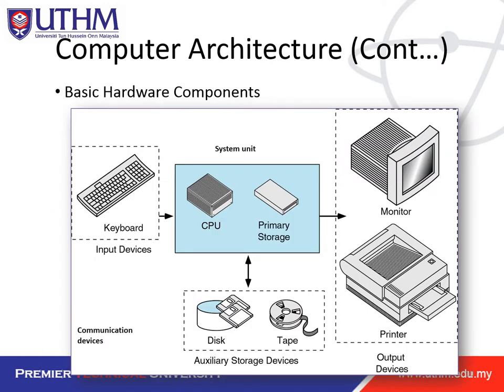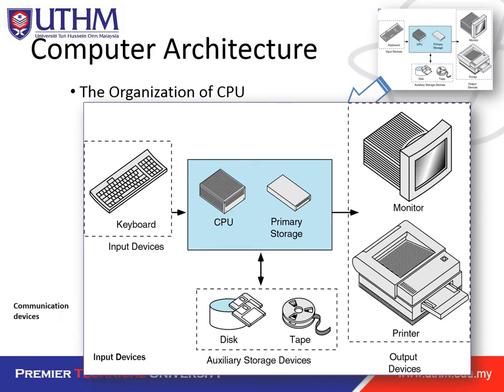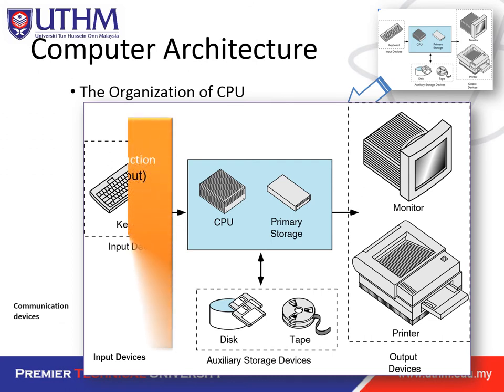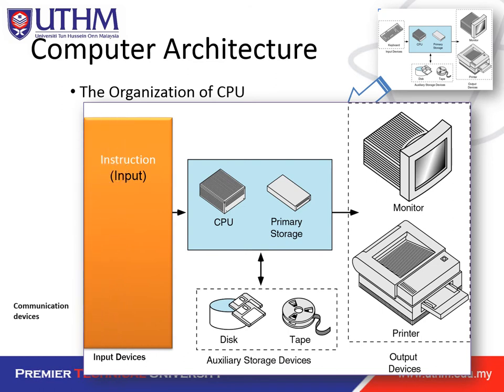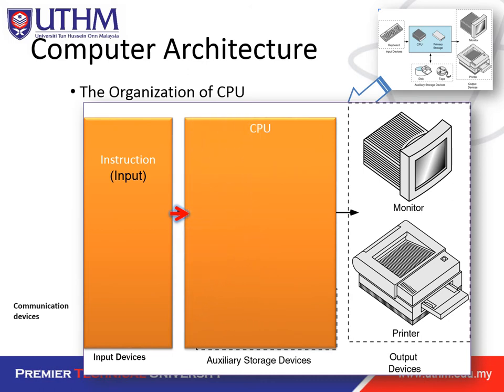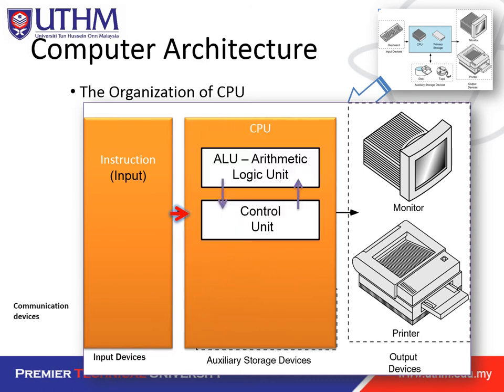This is the computer architecture — the basic hardware components. You can see the keyboard as the input device, and then you have the CPU, the secondary storage device, and the output device. The organization of the CPU shows the input device providing instruction input into the CPU system, which contains the ALU — arithmetic logic unit — and also the control unit.